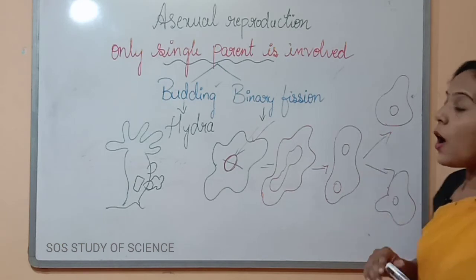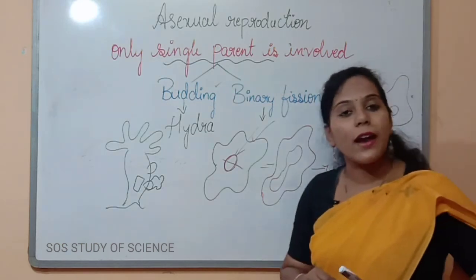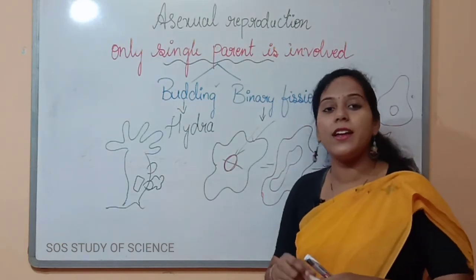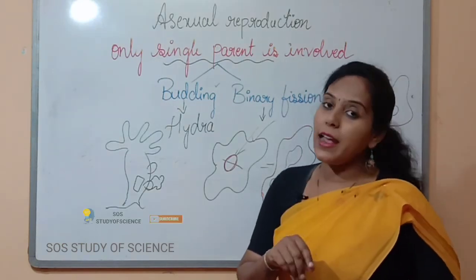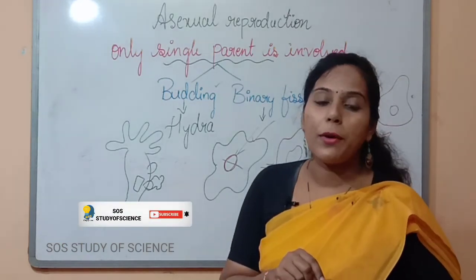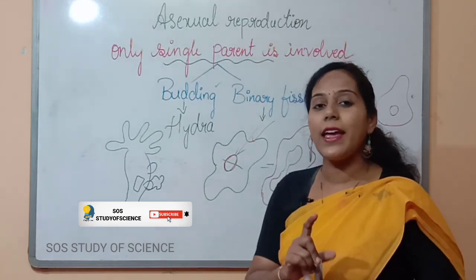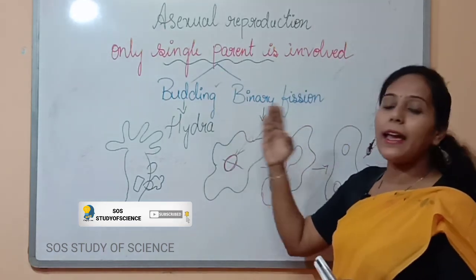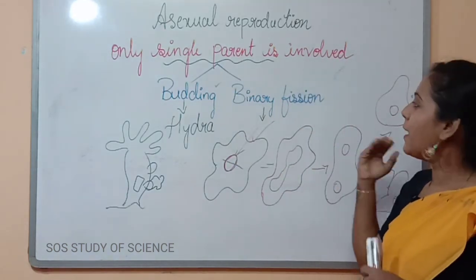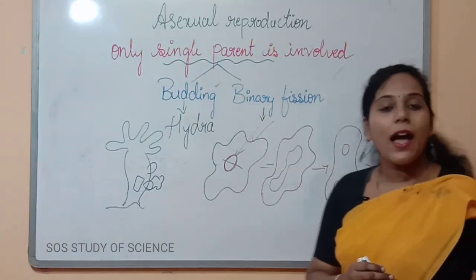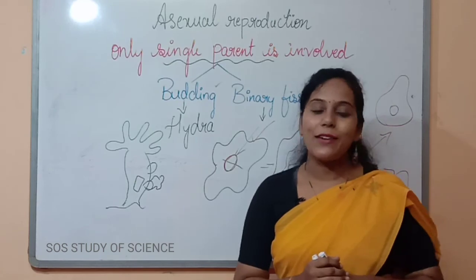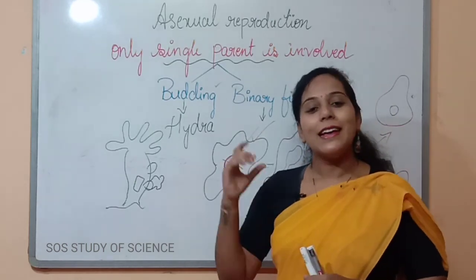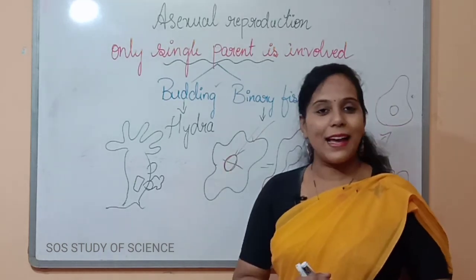So that is what you have to understand for this session: under asexual mode of reproduction, you will learn about budding and binary fission. I hope you all have understood this concept. Thank you.